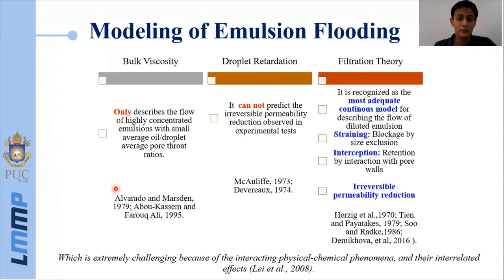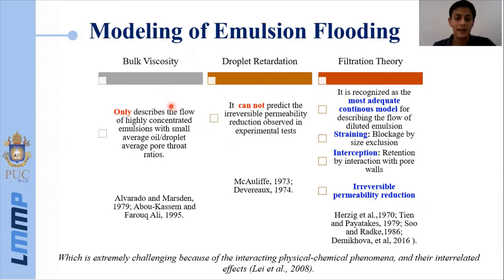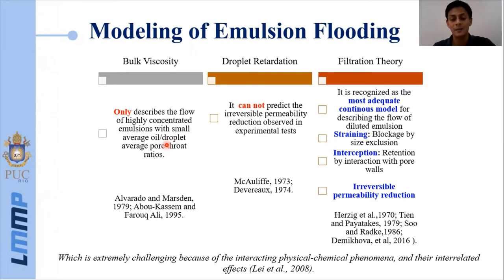About the different models proposed until now, we would like to highlight that there are several models and approaches, but we chose three of them that we consider are the basis for the others proposed. The first of them is the bulk viscosity model. This model only describes the flow of highly concentrated emulsion and represents the reduction of water mobility, considering the emulsion as a highly viscous fluid.